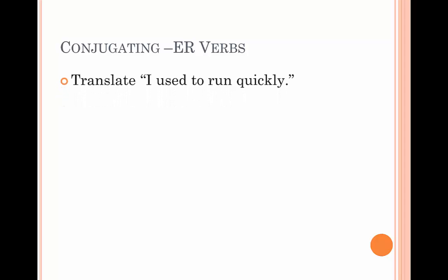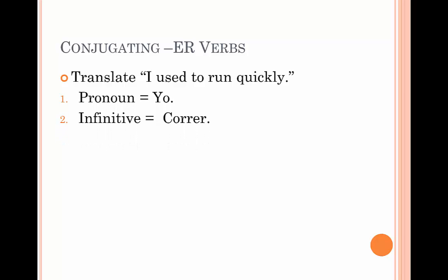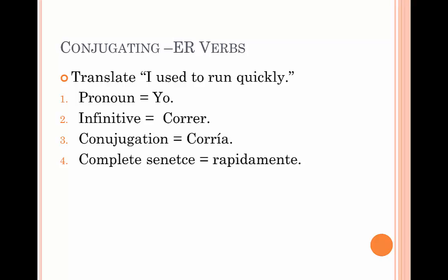Here's an example. We have to translate into the imperfect tense 'I used to run quickly.' So I take the pronoun yo, and the infinitive of run is correr. The conjugation is corría. So completing the sentence, we have rápidamente. Finally, we have the total sentence which is yo corría rápidamente.